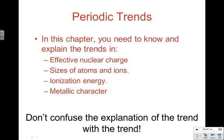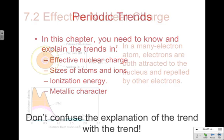One thing you need to understand: don't confuse explaining the trend with describing the trend. For example, you can't say oxygen is smaller than nitrogen because it's farther to the right — that's not explaining why, it's just describing the trend. When I say explain the trend, you need to say something more than 'it's farther down' or 'it's farther to the right.'